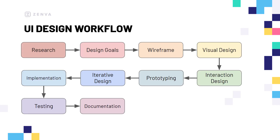And that is our UI design workflow. We walked through all 10 steps: from research, to design goals, to the wireframe, to visual design, interaction design, prototyping, iterative design, implementation, testing, and documentation. This isn't a complete and rigid format that you must follow, but just a general workflow going from the research phases to the developing phases all the way up to documentation — showing you the general process of how you should go about coming up with an idea to then implementing it. Thank you for watching.